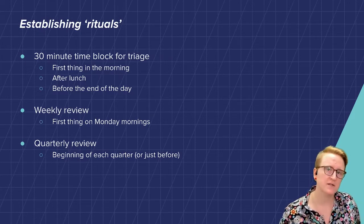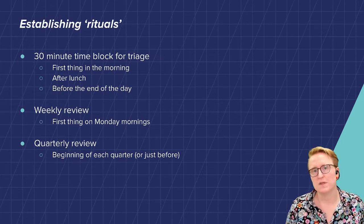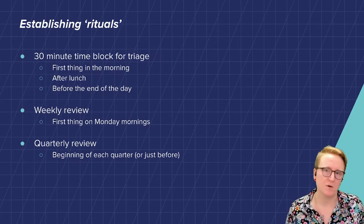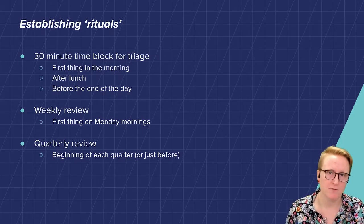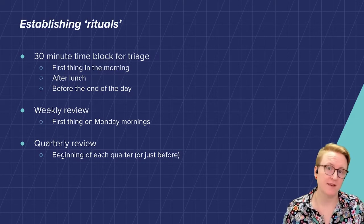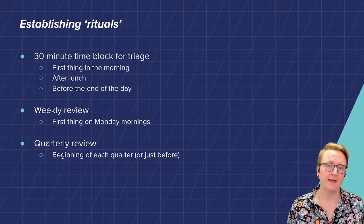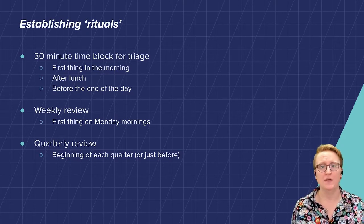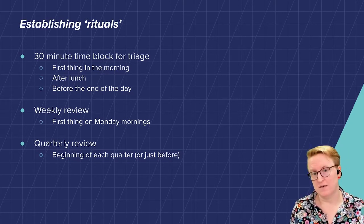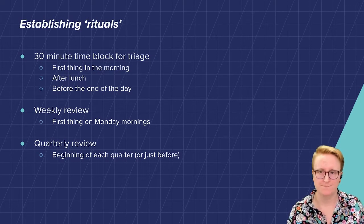And then quarterly reviews, usually around the time where we're setting our OKRs. I look at what did I do last quarter, did I meet my goals, were there things that fell through the cracks, why did they fall through the cracks, and then planning for the next quarter — thinking about what I need to do and what tasks I need to prioritize.